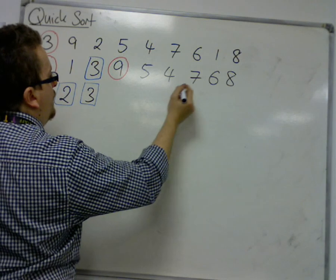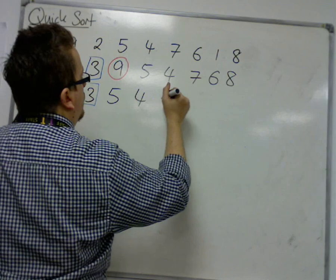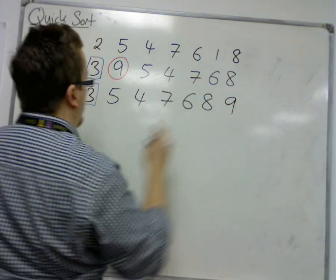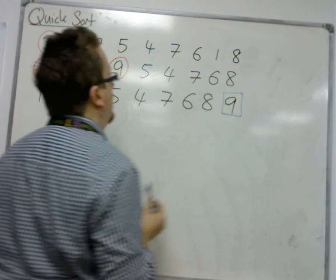We now have 5, 4, 7, 6, 8 are all smaller than 9. So, 9 is switched over here, and there's now dead.